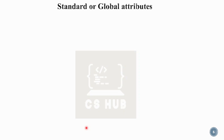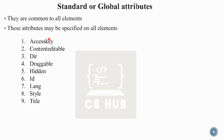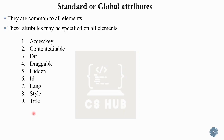Then there are standard or global attributes, which are common to all HTML elements. They may be specified on any element. Examples include: accesskey, contenteditable, dir (direction), draggable, hidden, id, language, style, and title. These are not element-specific — they are standard attributes that can be used on all elements.